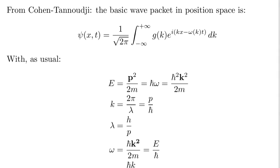I love going through different books and seeing how different authors define and start in different ways. Cohen-Tannoudji's idiosyncrasy is that he starts with a time-dependent wave function — that's where the e^{-iωt} comes in. Some books start with a time-independent wave function or just set t = 0, and then add time-dependence later.